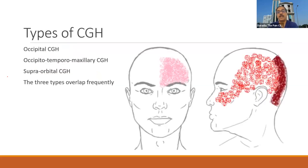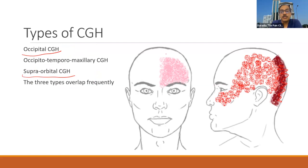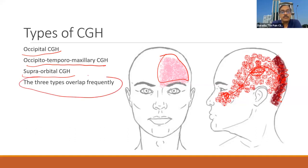There are three different types of cervicogenic headache. First is occipital — pain located in the occipital area. Second is supraorbital — pain only in the supraorbital area. Third is occipitotemporal-maxillary — starting from the occipital area, then the temporal area, and also the maxillary area. And fourth is a combination of all three types, where the patient may have pain in all these areas.